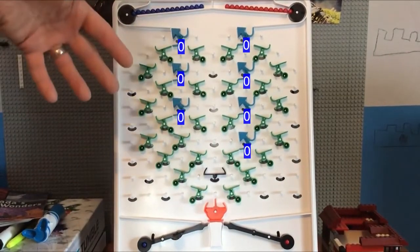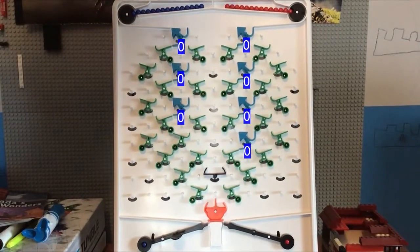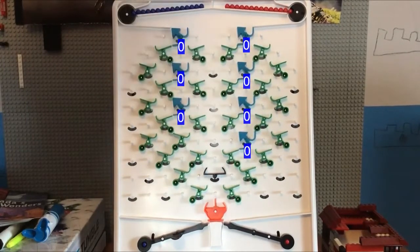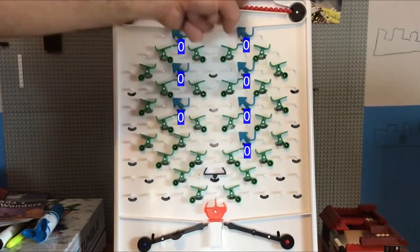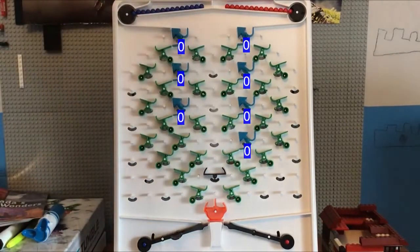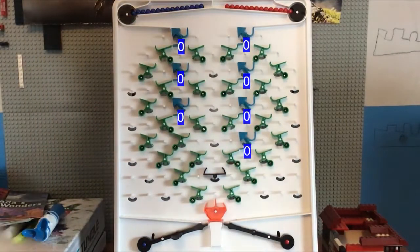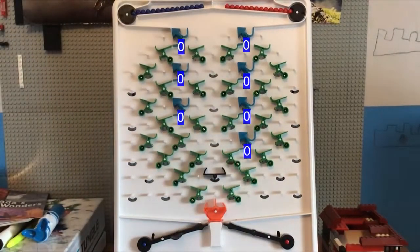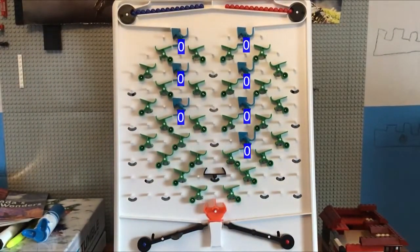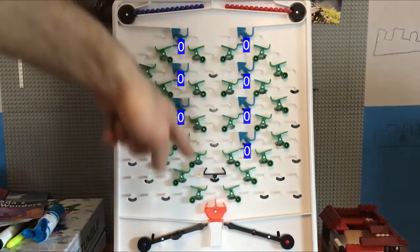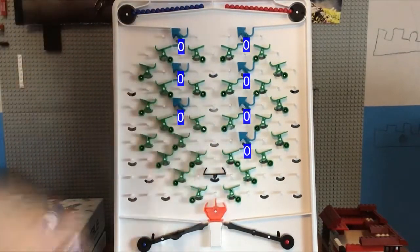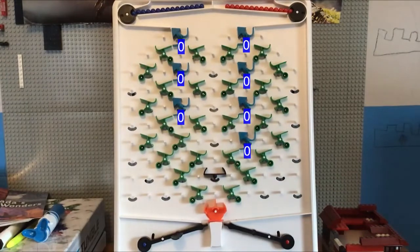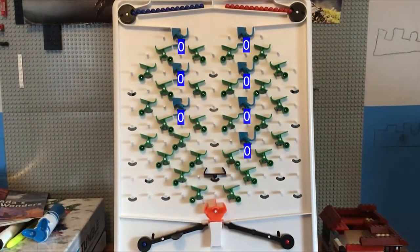As these marbles fall down, it will add these two numbers together, storing the final result over here on the right-hand side. If we have a successful calculation, then we will see a blue marble end up here at the end. And if we have what is called an overflow, then a red marble will end up in here. And that means that the number was too big for us to add them together.